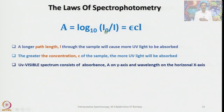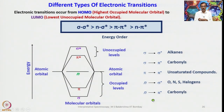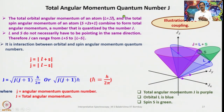In UV-Visible spectroscopy, Beer-Lambert's equation is very important: a longer path length causes more UV light to be absorbed, and greater concentration also increases absorption. A UV-Vis spectrum has absorbance on the y-axis and wavelength on the x-axis. Different types of electronic transitions include σ→σ* (highest energy), π→π*, and n→π*. The energy levels change with functional groups and conjugation.